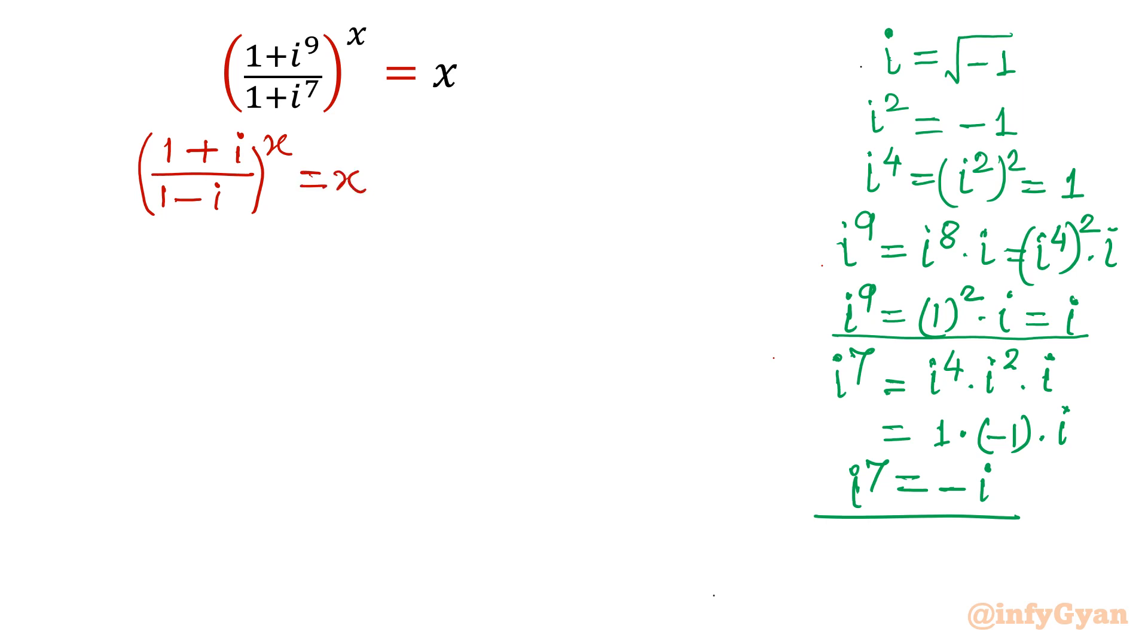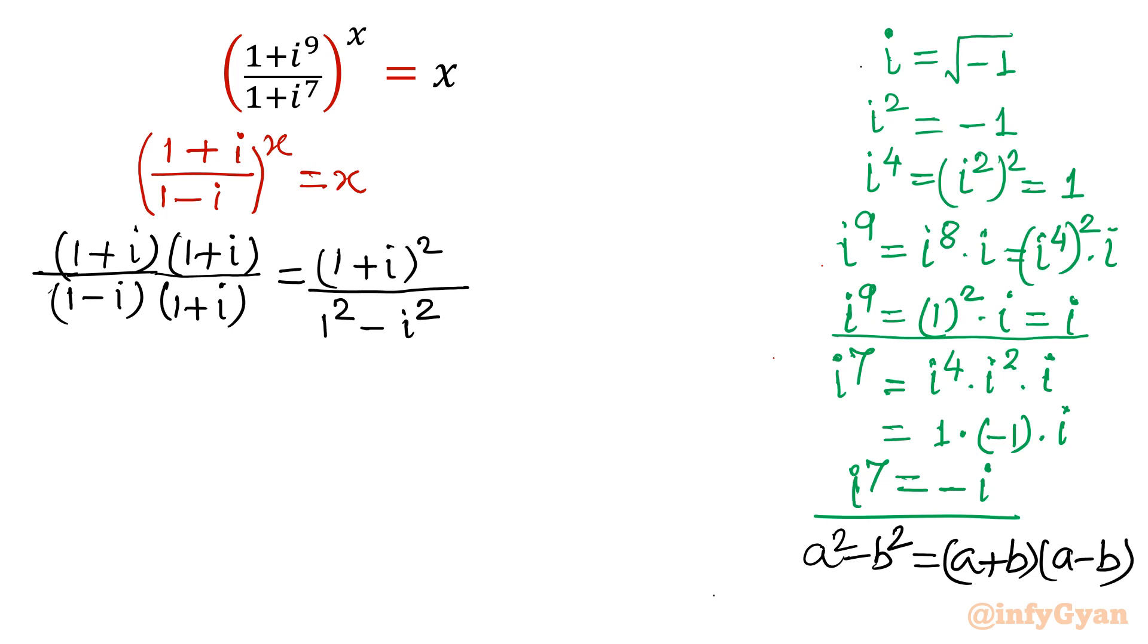Now I will simplify this (1 + i)/(1 - i) first. So we will use rationalization. I will take denominator's conjugate, which is 1 + i. I will multiply in the numerator and denominator by the same. Once I multiply by its conjugate, then I will have (1 + i)^2 in the numerator. And in the denominator, the difference of two squares. I will write 1^2 - i^2. Let me write here the difference of square formula, which is a^2 - b^2 = (a + b)(a - b).